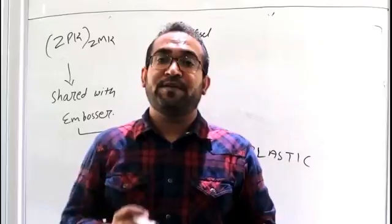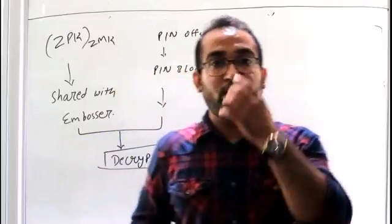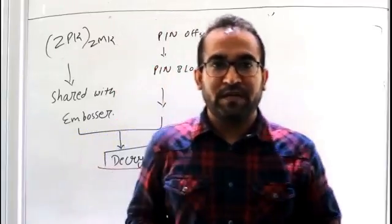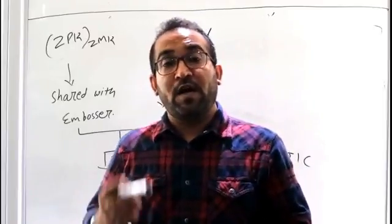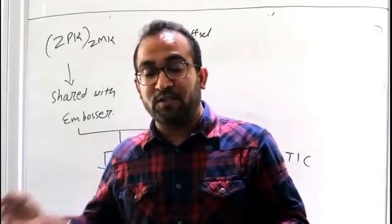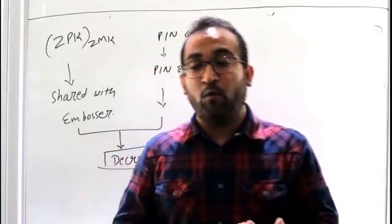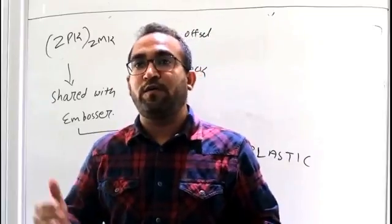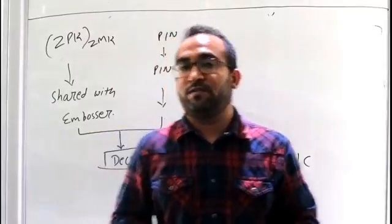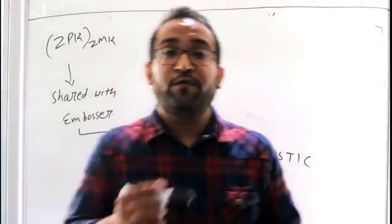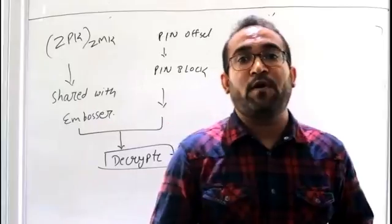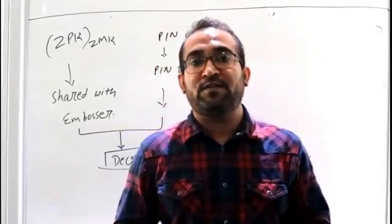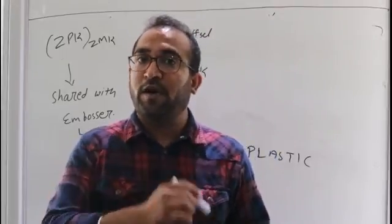In this video we covered the very basic part of HSM keys. In the next video we are going to take the keys one by one — for example, the PVK, the PIN Verification Key — and try to understand what HSM commands are passed to the HSM to generate the PVV offset, and what commands we use to encrypt the PIN block. We will take the keys one by one to complete this series of HSM sessions. Thank you very much for watching. If you have any doubt or question, you can sign up on my website www.alltechies.com and post your question there. Thank you once again and stay connected.